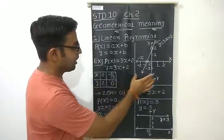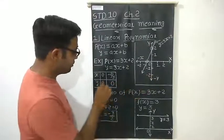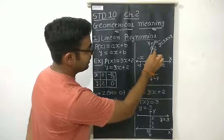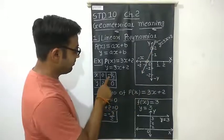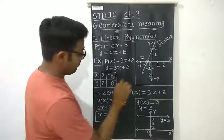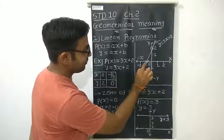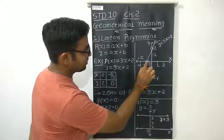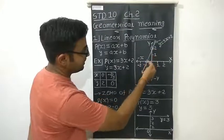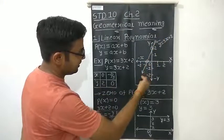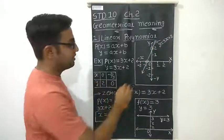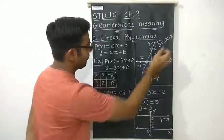By plotting these on the graph, the first point is (0, 2) and the second point is (−2/3, 0). Since −2/3 is approximately close to −1, we place it near −1. By joining these two points, we get a line, and that is the graph of the polynomial 3x + 2.